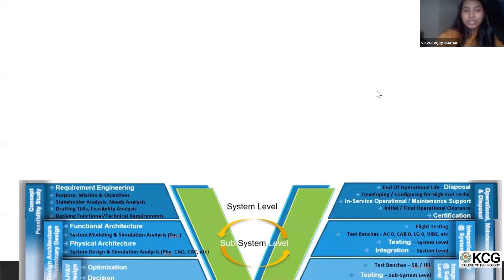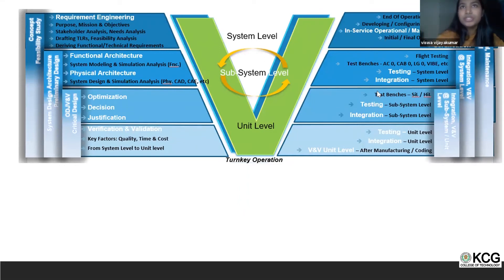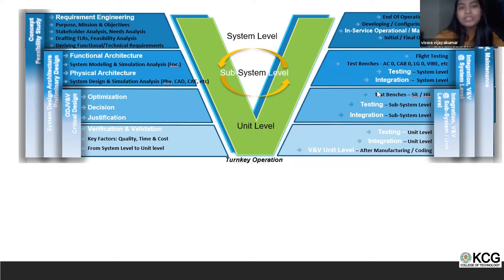The backbone of systems engineering is the V model. There are other models like the waterfall model, but most industries today use the V model. In the V model, the left side involves requirement engineering — collecting all needs from the customer and stakeholders, consistently identifying requirements, and conducting a feasibility study.